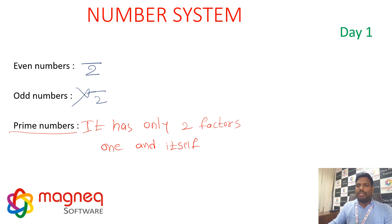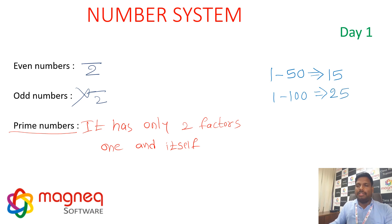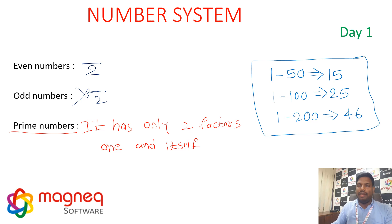A simple question: how many prime numbers are there between 1 to 15? There are 6 prime numbers. Between 1 to 100? There are 25 prime numbers. Between 1 to 200? There are 46 prime numbers. These are important direct questions — no need to calculate.